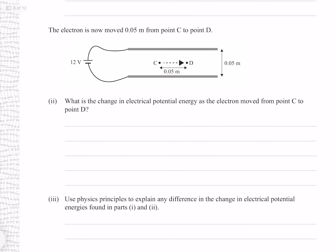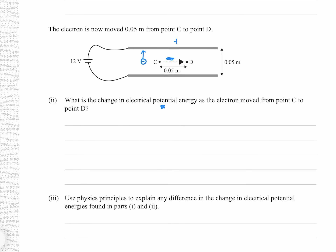The electron is now moved 0.05 metres from point C to D — what is the change in electric potential energy? If we imagine our electron between these plates, it experiences an upwards force attracting it to the positive plate. Moving with or against this force changes the electric potential energy. However, moving at right angles to it, such as what we're doing here, will not be affected by this force and therefore will have no effect on the electric potential energy — so we'd expect no change.